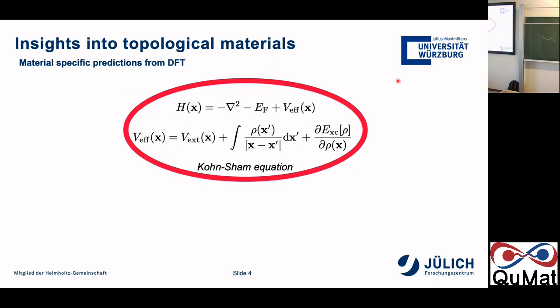Not everybody here is a density functional theory expert, so let me briefly give you an overview. In density functional theory, we do quantum mechanical simulations. We basically take the Schrödinger equation and solve it for the ground state in a reformulation called the Kohn-Sham equation, which is written up here. This is the Hamiltonian.